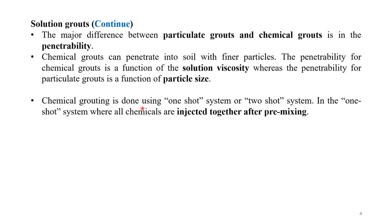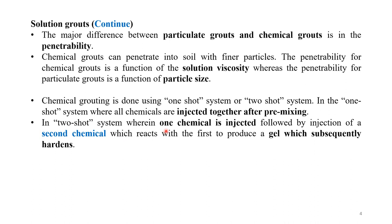Chemical grouting is done using a one-shot system or a two-shot system. In a one-shot system, all the chemicals are mixed together and injected at the same time after pre-mixing. In a two-shot system, one chemical is injected first, followed by injection of a second chemical, which reacts with the first to produce a gel that subsequently hardens.